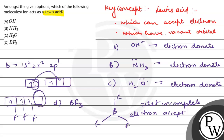So electrons can be accepted by BF3 through its vacant orbital. That means BF3 is the Lewis acid because it can accept electrons. I hope you find the answer — best of luck. Thank you.